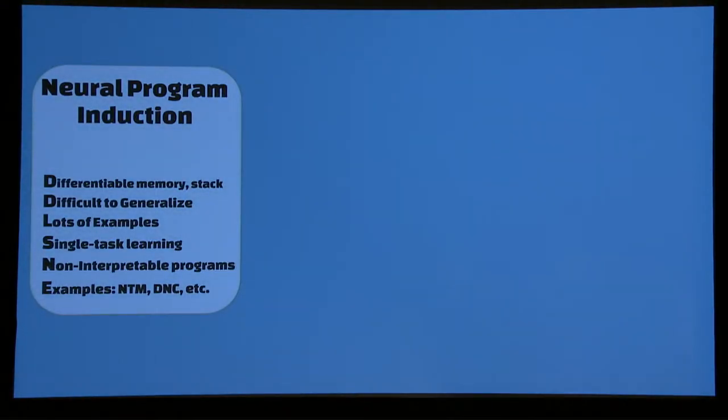These are all interesting works, but the problem with these approaches is that since the network itself is the program, it's hard to give any kind of guarantees. If we train it on lists up to length 20, when we give it list of length 21, they tend not to work well. Secondly, they require lots of examples, training data to train. They are not interpretable because at the end of the day, these are just a neural network.